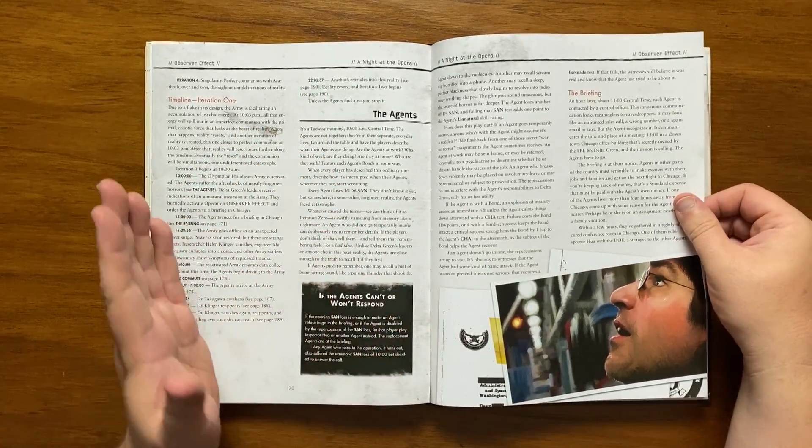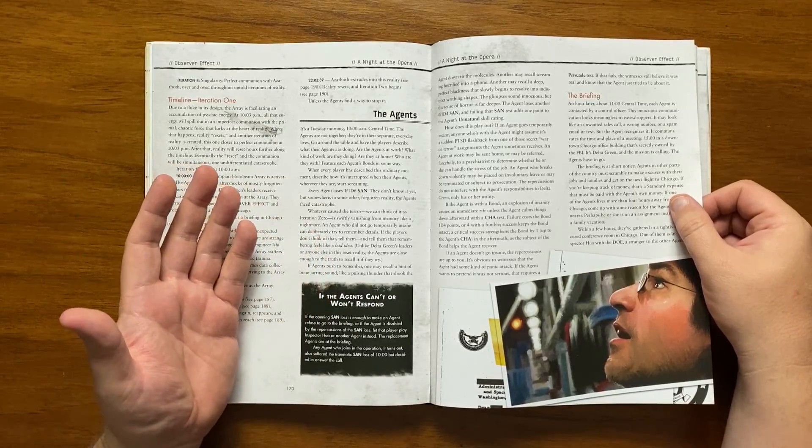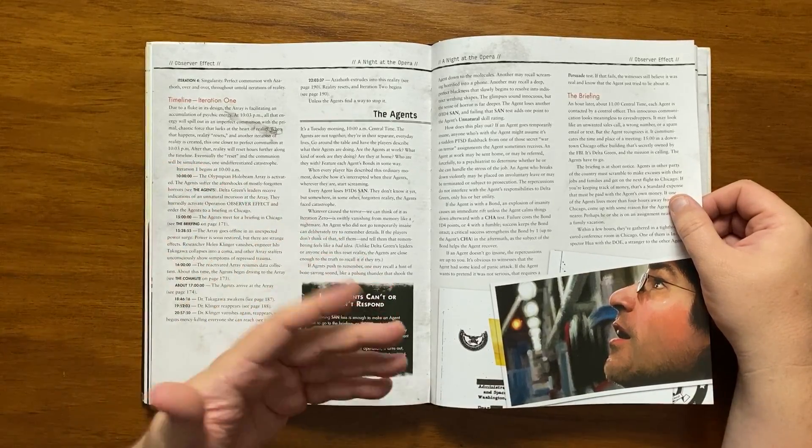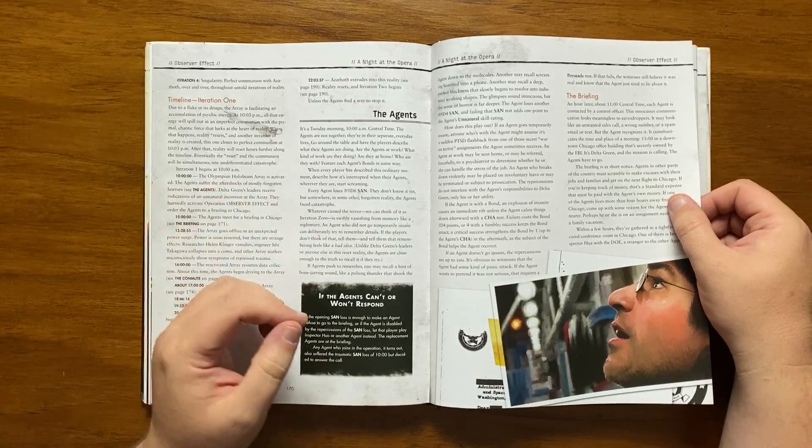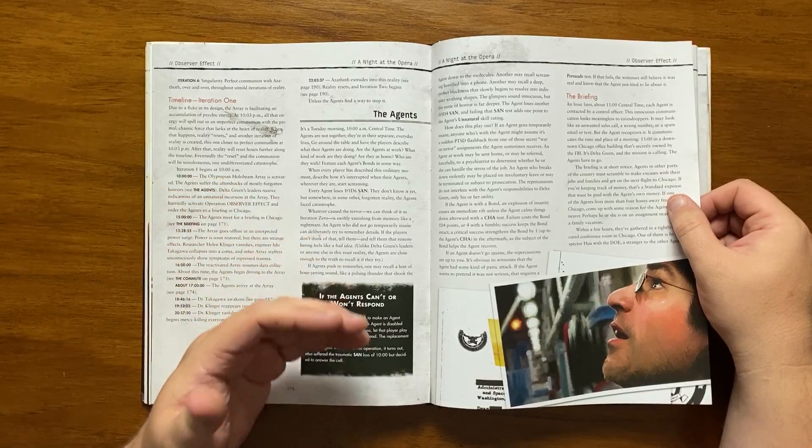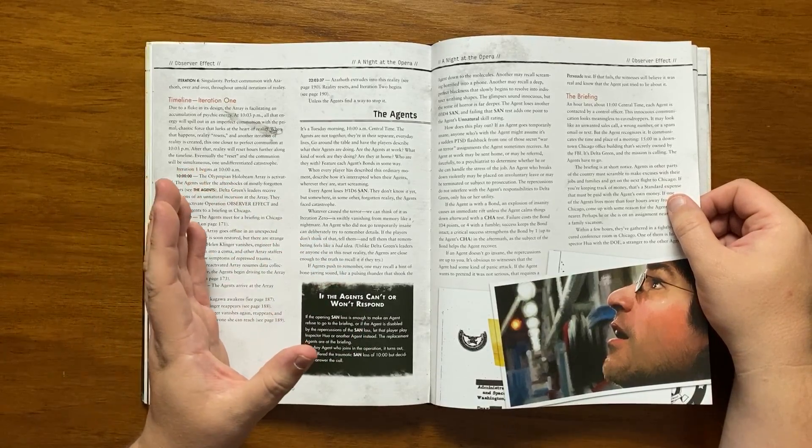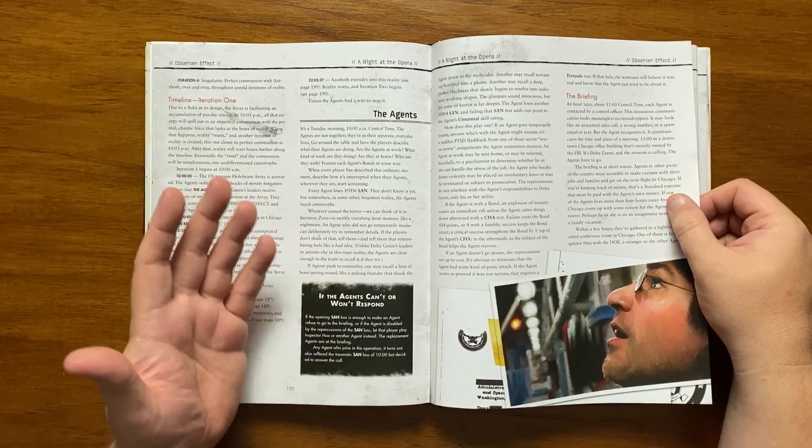So the first thing it tackles is the agents themselves. They're all separate, going about day-to-day tasks when they start screaming, take a sand hit, and then whatever it was that caused this fades into the ether with trying to remember seeming like a really bad idea, though if they push this they remember hints of things like a bone-jarring sound, pulsing thunder that shook them to their very core, screaming into a phone, a deep, powerful blackness, and then they take another sand hit for trying to remember.